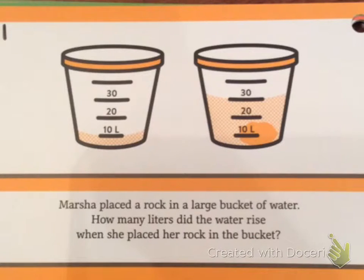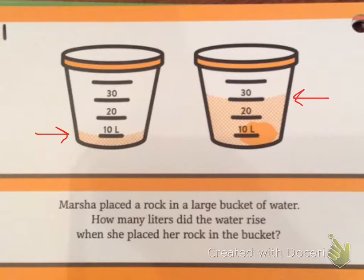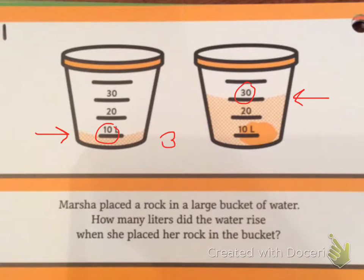Well, let's look where it was before. Before it was at 10 liters. After it's at 30 liters. So I know that 30 minus 10 equals 20.